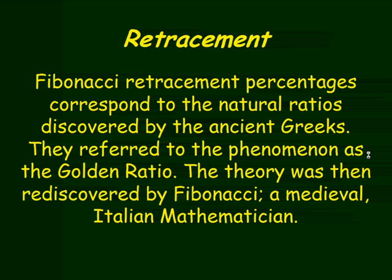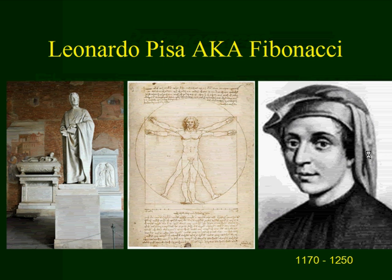Retracements. Fibonacci retracement percentages correspond to the natural ratios which were discovered by the ancient Greeks. They referred to the phenomena as the golden ratio. The theory was then rediscovered by Fibonacci, a medieval Italian mathematician — Leonardo Pisa, also known as Fibonacci. He lived from 1170 to 1250 A.D. And as you can see, his work was then copied by Da Vinci.